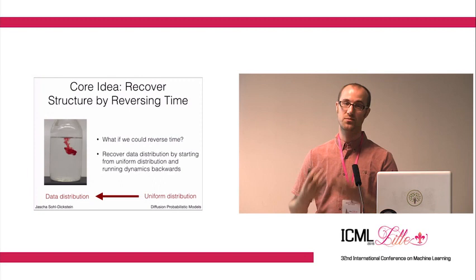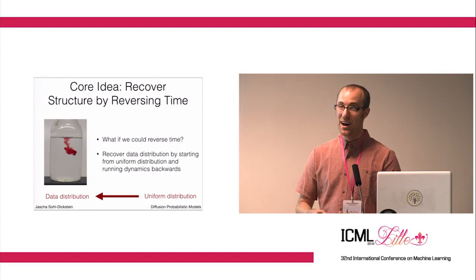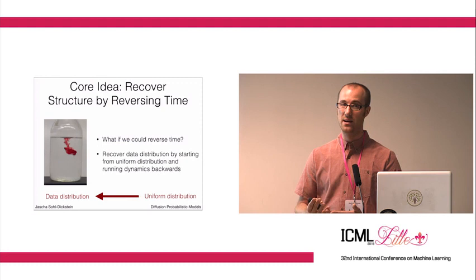On its face, this seems like a pretty strange idea. You can't get dye to unmix in a liquid anymore than you can get a glass to spontaneously unshatter. But it turns out that using machine learning, we can learn the Markov process for this reverse diffusion process.